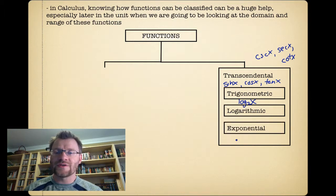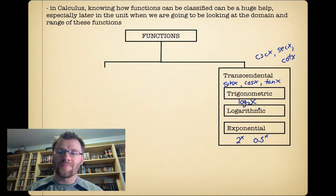And you have exponential functions, and that's when your exponent is actually your variable, so something like 2 to the x, or 0.5 to the x, something like that would be exponential functions. So those are all transcendental functions.